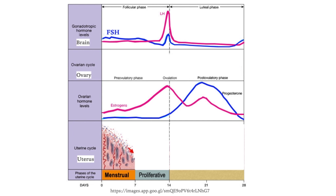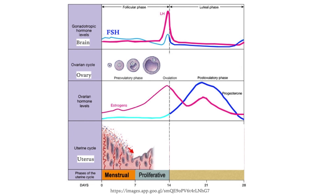Follicle-stimulating hormone secreted by the pituitary gland gradually increases, stimulating the development of several follicles in the ovaries. The growing follicles start to secrete estrogen and progesterone, and in response to the increasing hormones, the endometrium gradually thickens secondary to cellular proliferation. In the middle of the menstrual cycle, a sudden surge of luteinizing hormone leads to ovulation, which usually occurs 16 to 32 hours after the surge begins, at day 14 on a 28-day cycle.